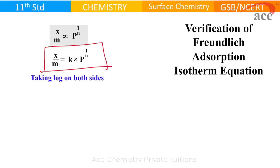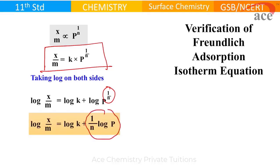We take log on both sides. When we take log on both sides, we get log x by m is equal to log k plus log P raised to 1 by n. You know the rule: when any power is there in the log, it comes out. So ultimately it becomes log x by m equals log k plus 1 by n log P. This is very, very important.